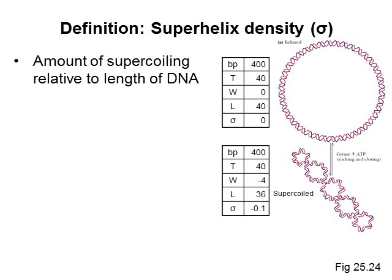So you can imagine that you have two pieces of DNA and both have a writhe of minus 4. These DNAs are going to behave differently if one has 400 base pairs and the other one has 40,000 base pairs. The one is much more supercoiled than the other relative to its length, and sigma provides a way to quantify this difference.